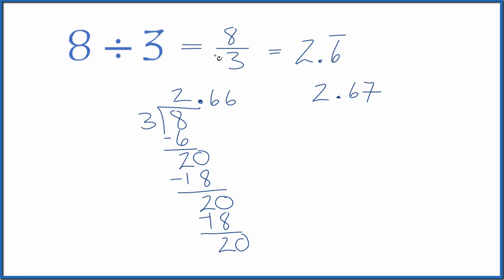So when you divide 8 by 3, you get the fraction 8 thirds, or you get the number 2.6 with the sixes repeating, and you could round that to 2.67 as well.